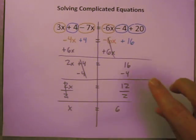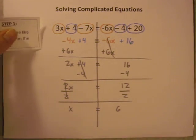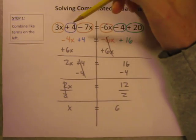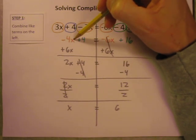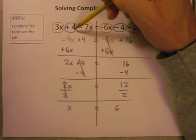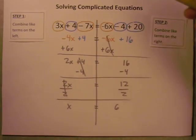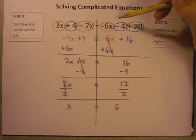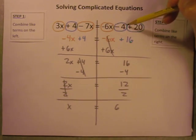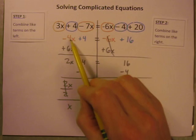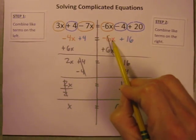Alright. Hopefully you came to an answer and let's see if your answer is correct. So there is my work right there. When I combine like terms on the left, I get 3x minus 7x is negative 4x. There's nothing to combine the 4 with so I'll just rewrite that. When I combine like terms on the right, step 2, the negative 6x is the only x term on the right so I'm just going to copy it down. There are two numbers though that I can combine. Negative 4 plus 20 is 16.